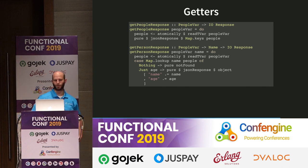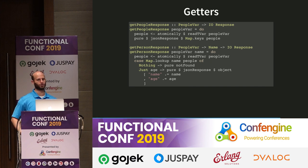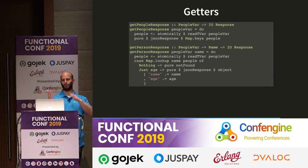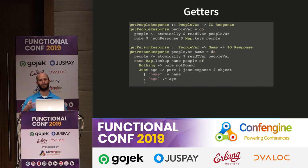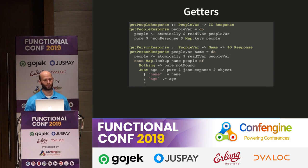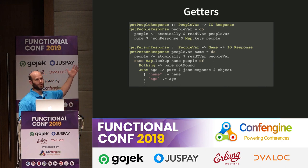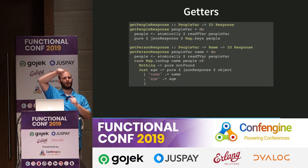Our two getter endpoints: getPeopleResponse takes in a PeopleVar and returns an IO Response. We atomically read the TVar to get the current mapping of all people. Our API is supposed to just return the array of names, so we use map.keys to get the keys from this map, turn that into a JSON response, and we're done. getPerson response takes in the PeopleVar and the name we're looking up. It gets the people map, looks up the name, returns a 404 if the name isn't found, and otherwise constructs a JSON response body using Aeson's object syntax.